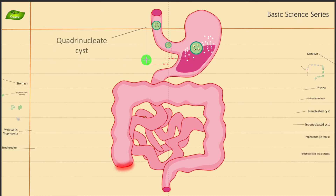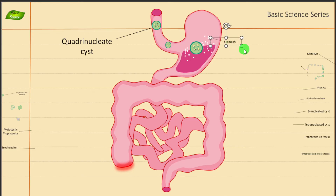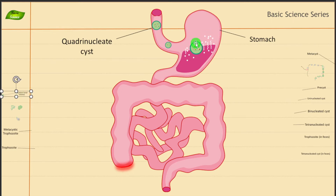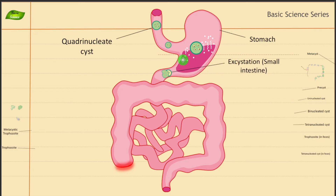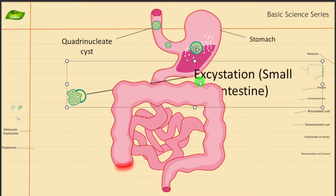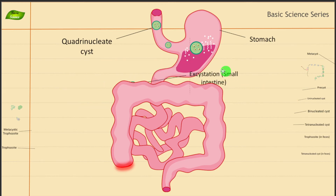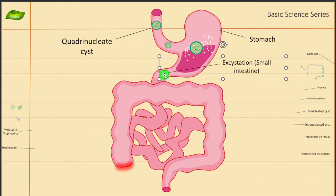Let me label these things. This is the tetranucleated cyst — we can also call it the quadrinucleated cyst. This is the infective form of Entamoeba histolytica. Let me also label the human stomach. From the stomach, it is going to pass into the small intestine, where its outer covering gets digested by trypsin. Because of that, another form gets released from that cyst — we call it the metacyst. This process of excystation is happening where the outer covering is removed by trypsin.